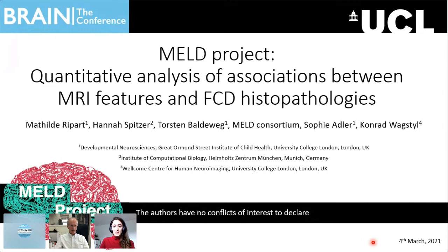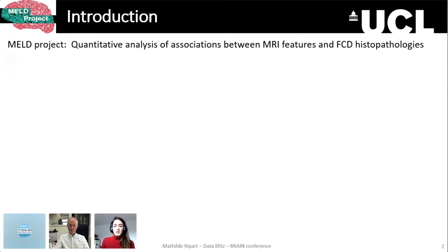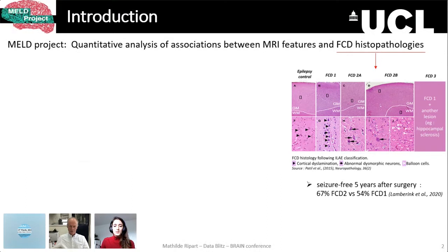Focal cortical dysplasia is an important cause of focal epilepsy, characterized by structural abnormalities that can cause focal seizures. These abnormalities are classified into different subtypes based on histology and are known to have different impact on the likelihood of seizure freedom after surgery. Indeed, FCD2 is associated with a better seizure outcome compared to FCD1, and therefore it is important to identify the histopathology prior to surgery.